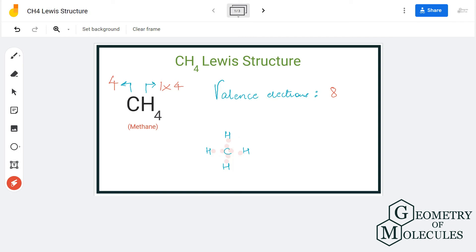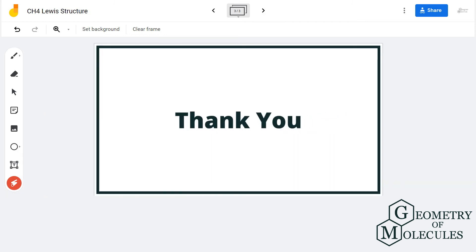So we have used eight valence electrons here. Carbon has a complete octet, hydrogen has attained a stable structure, and this is the Lewis structure for CH4 methane.